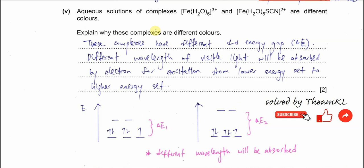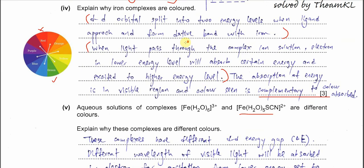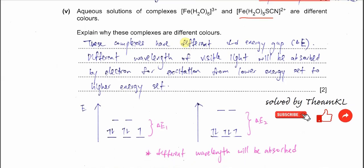Part B5: aqueous solutions of hexaaquairon(III) and another iron complex are different colours. Explain why. We need to focus on the delta E — the d-d energy gap. Different ligands produce a different delta E. When delta E differs, the wavelength of light absorbed is also different, and therefore we see a different complementary colour. Two complex ions with different delta E values will have electrons absorbing different wavelengths, resulting in different colours being observed.